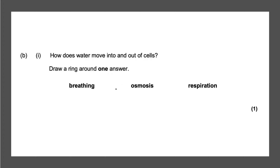Next question: how does water move into and out of cells? Draw a ring around one answer. The simple answer is osmosis, as it is the diffusion of water, and that will give you your one mark.